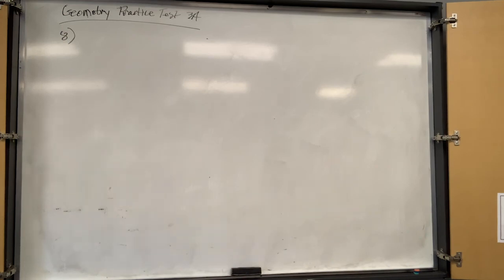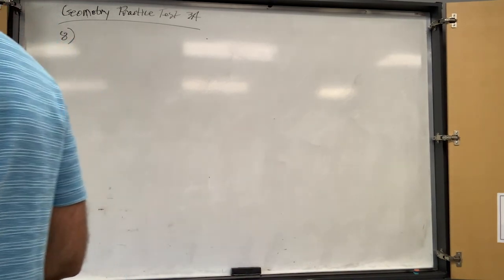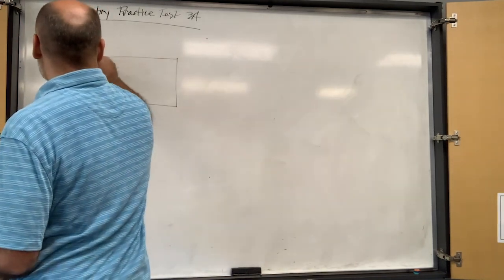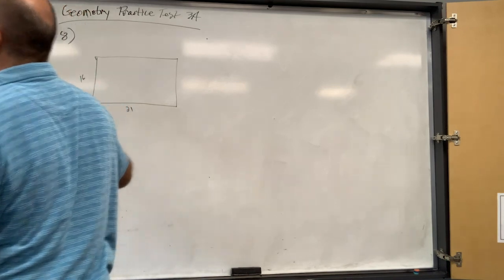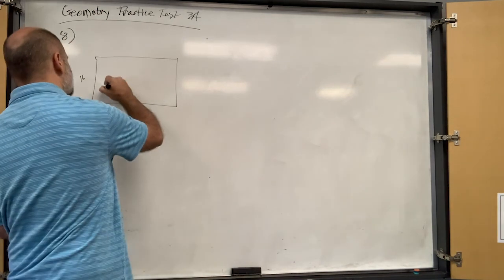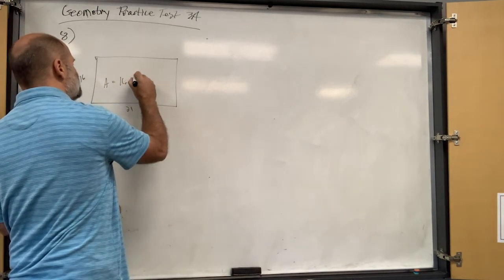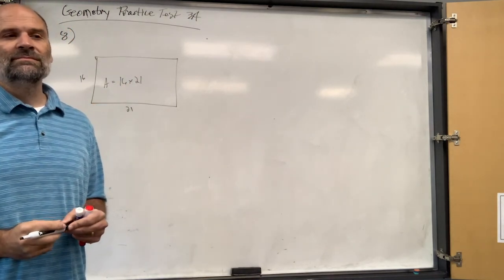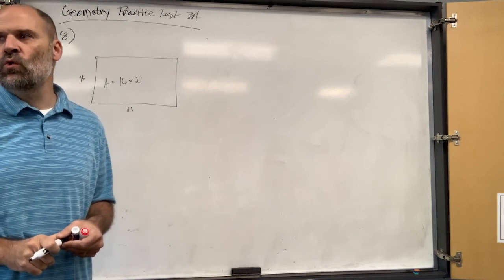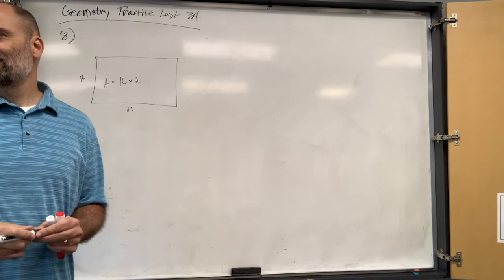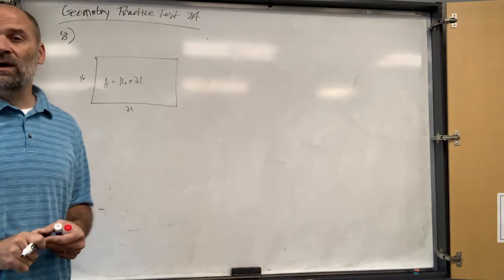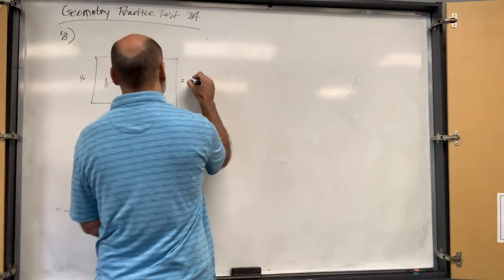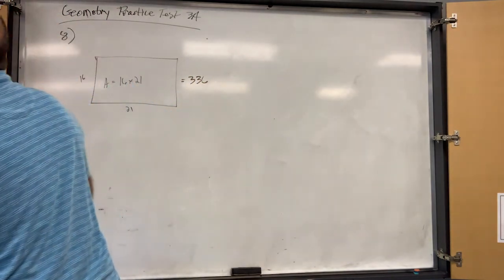Number eight: Michael wants to carpet his living room. The floor is a rectangle that is 16 by 21. Area equals 16 times 21. 16 times 20 is 320, plus 16 is 336 square feet.